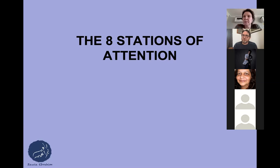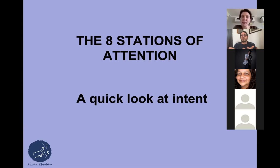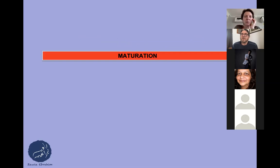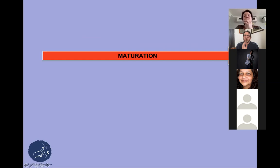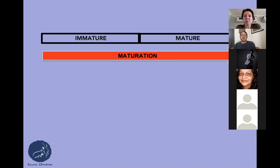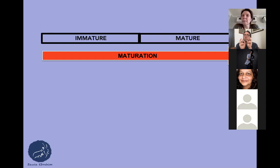I'm going to start off by giving you a very quick thumbnail sketch into the issue of intent, and also try to explain why we needed a greater level of sophistication to understand maturity by looking at the eight stations of attention. If you're looking at the intent model of maturation, it basically looks at the problem of maturation as an absolutely linear progression from being immature to being mature.